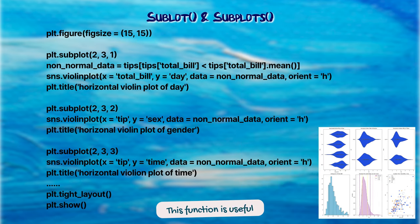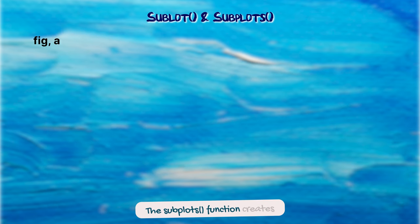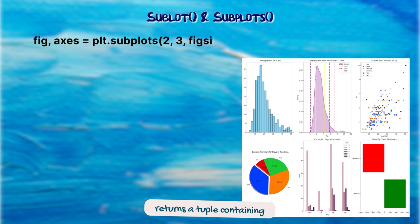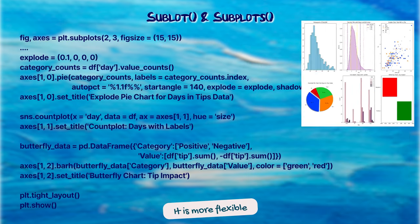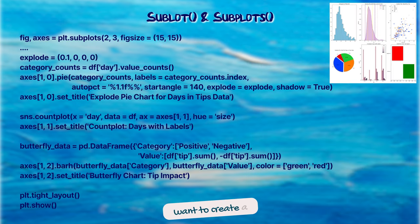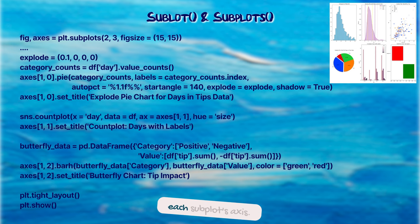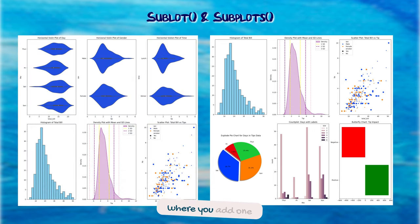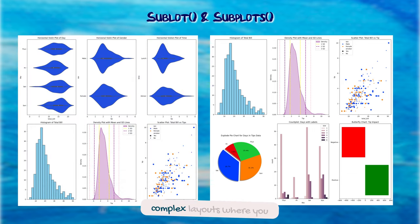The subplots function creates a grid of subplots all at once and returns a tuple containing the figure and an array of axes objects. It is more flexible and convenient when you want to create a fixed-size grid of subplots with easy access to each subplot's axes. Choose subplot for simple cases and subplots for more complex layouts where you need to manage multiple subplots together.